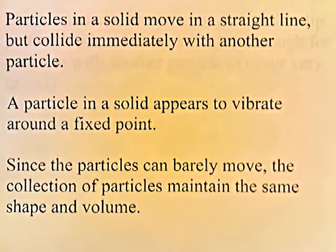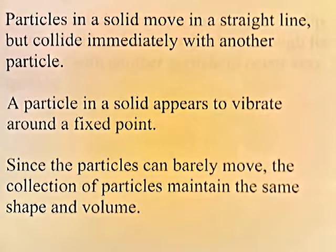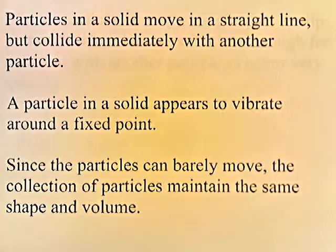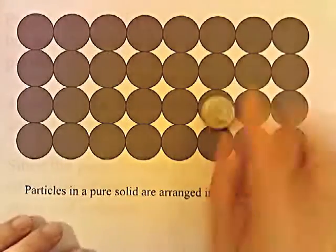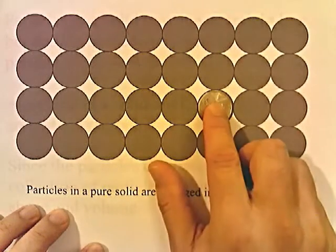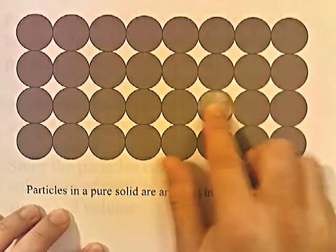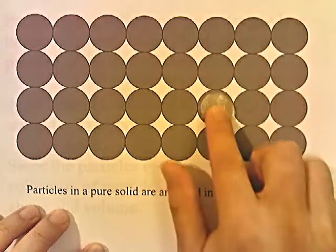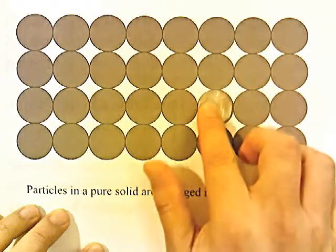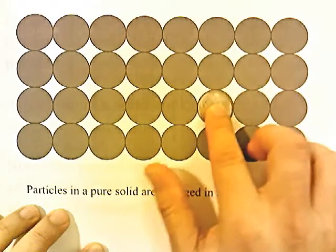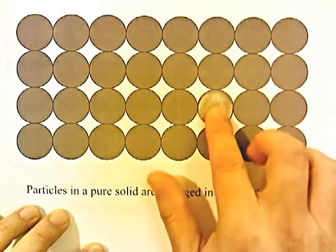Particles in a solid move in a straight line but collide immediately with another particle. A particle in a solid appears to vibrate around a fixed point. Since the particles can barely move, the collection of particles maintains the same shape and volume. The particles in a solid do move, but they appear to vibrate back and forth — the other particles are so close that they don't get very far, so it appears as though they vibrate around a fixed point.